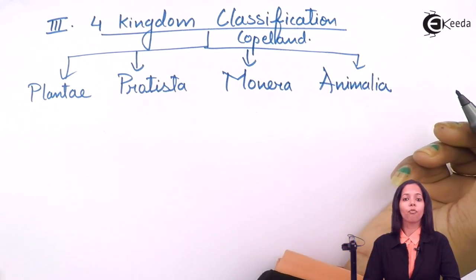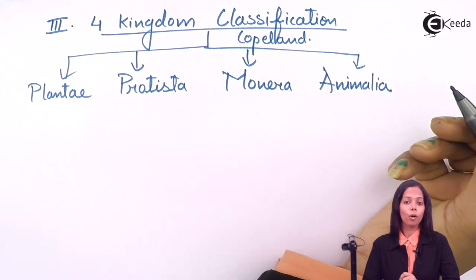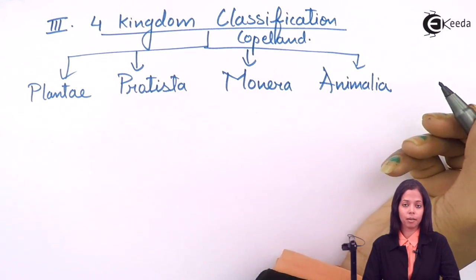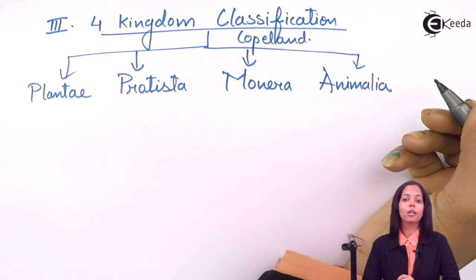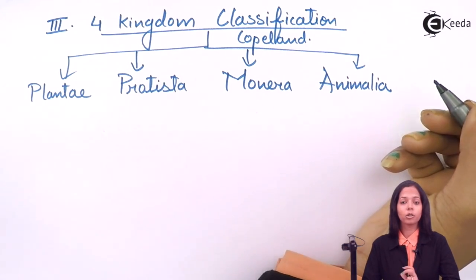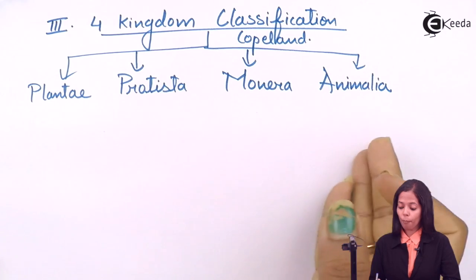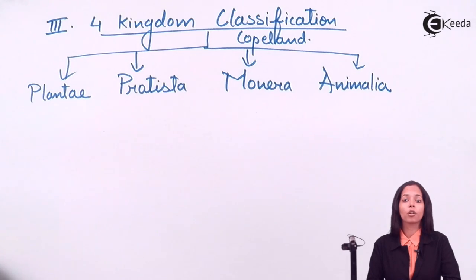The fourth kingdom, Kingdom Monera, consists of prokaryotic unicellular organisms. However, in Protista, unicellular fungi and amoeba were still placed together, and there was no separate place for fungi in this system. That is why this system was also rejected.